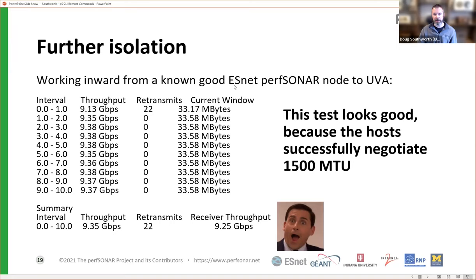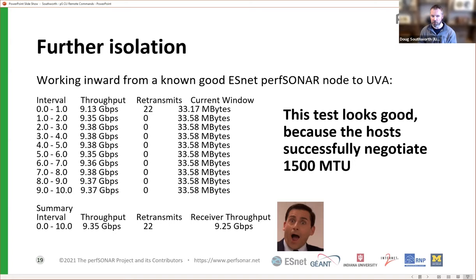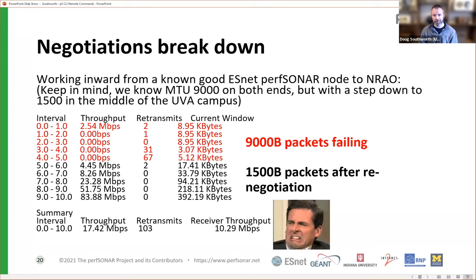Here's a prime example. We take a known-good ESnet host — up in New York or Washington DC — and start working our way inward to UVA. We know the ESnet one is at 9000 MTU and the UVA one is 1500. These two hosts right up front quickly negotiate 1500, and you can see there's good bandwidth between them. There are a few retransmits initially — that's the TCP ramp up — but after they figure it out, they negotiate cleanly, no retransmits, bandwidth is solid. That's ideally what good path MTU discovery should look like.